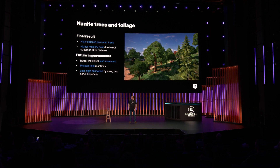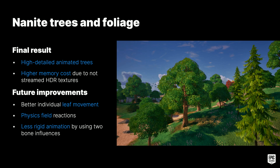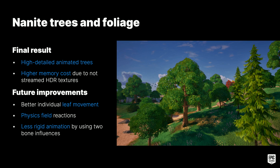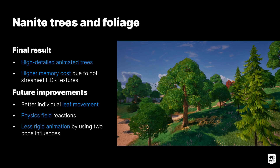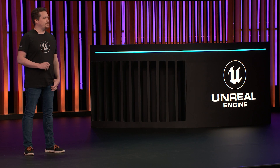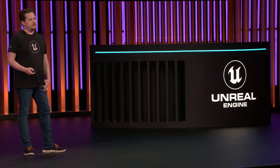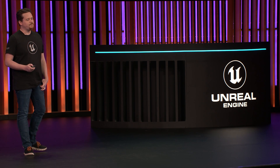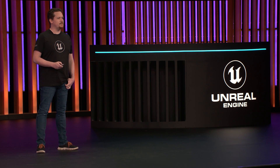The result is really high-detailed trees where each leaf is modeled and we have nice animations. But that comes at a higher memory cost due to the uncompressed HDR textures we need. We also have to sacrifice individual leaf movement with this system — something we want to improve in the future. Our trees don't currently react to physics fields, and the animation is rigid. We'd like to soften this by using at least a two-bone influence.